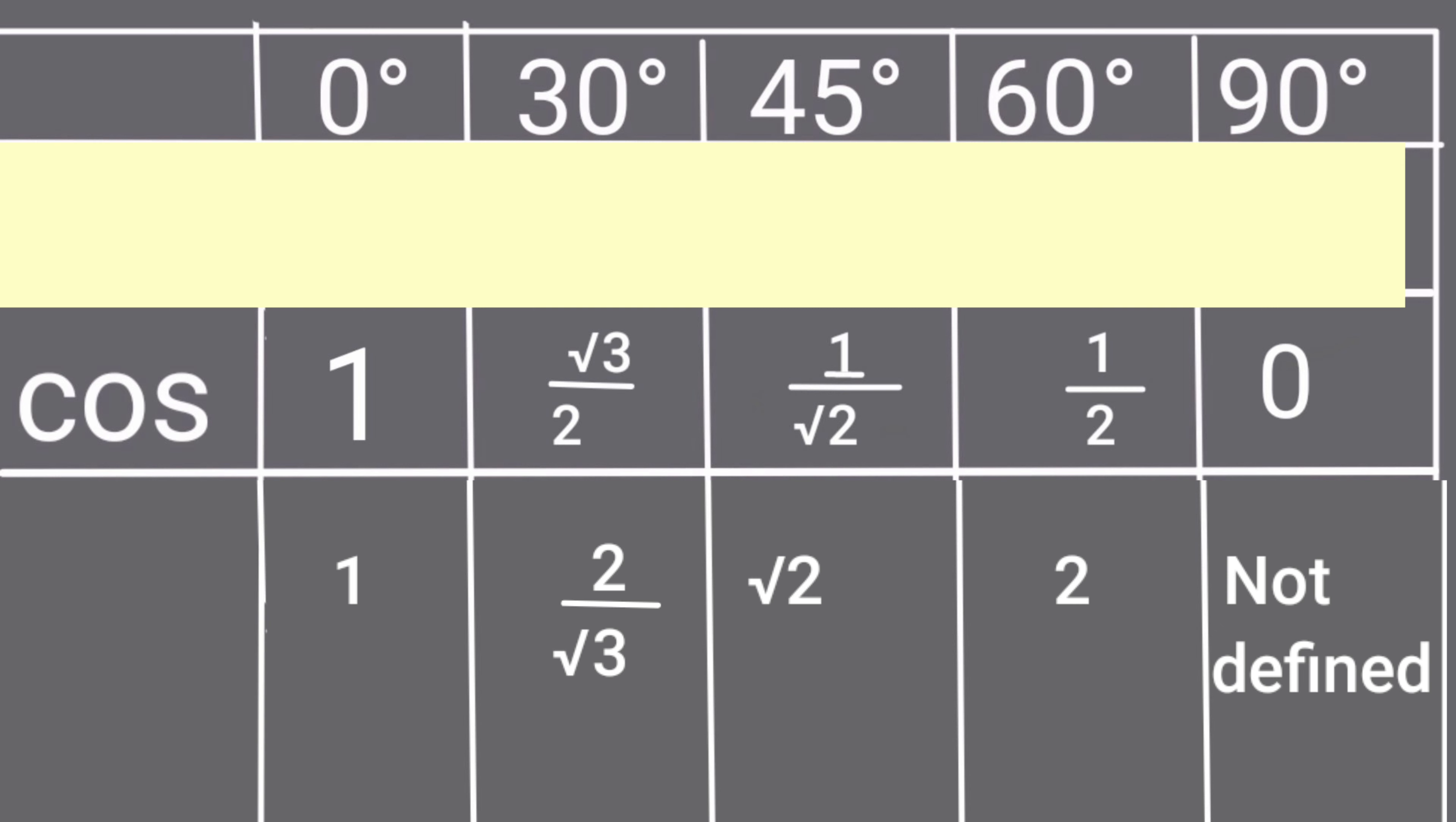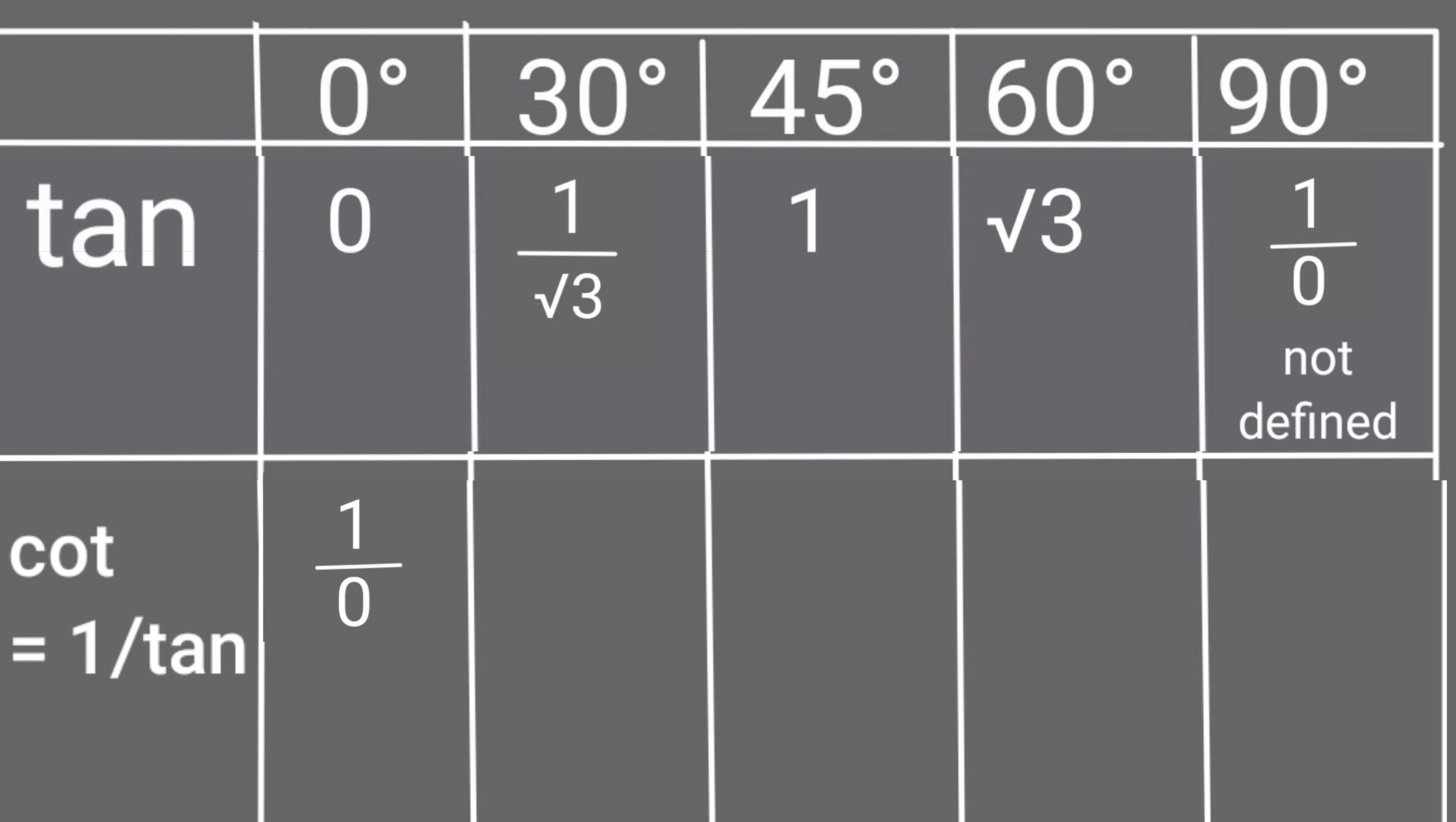Now, the cot ratios. Cot theta is equal to 1 by tan theta. Cot 0 is not defined, and other cot ratios are root 3, 1, 1 by root 3, and 0.